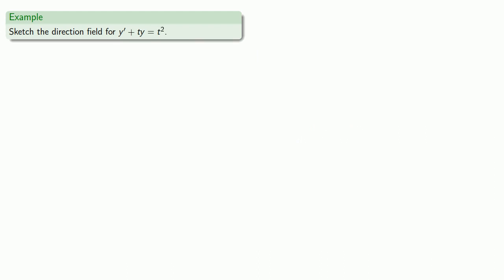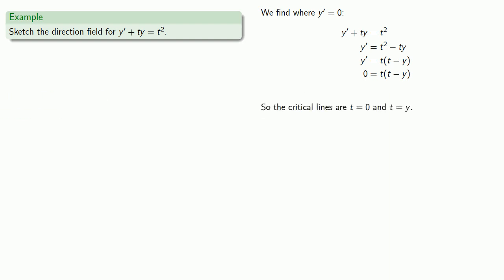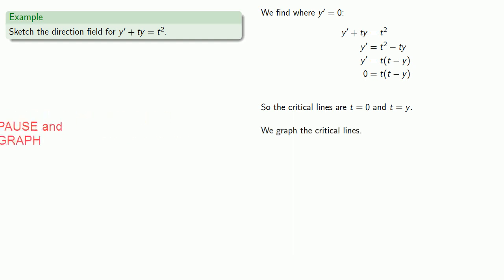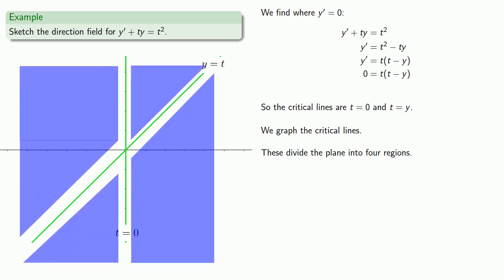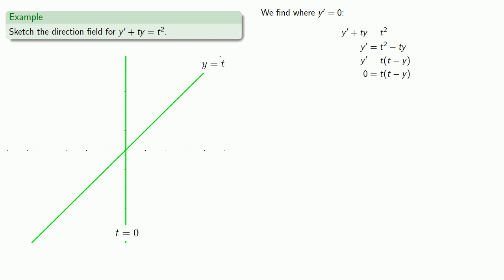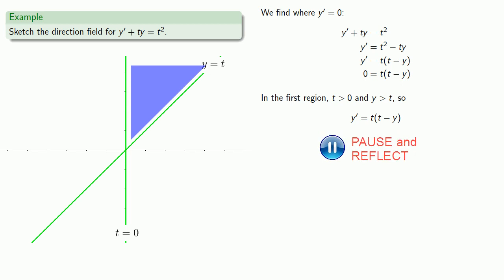Now consider another differential equation. We want to find where y' is equal to 0. Setting it equal to 0 and solving gives us the critical lines t = 0 and t = y. We graph the critical lines, and note that these divide the plane into four regions. In the first region, t is greater than 0 and y is greater than t. Using the factored form of the derivative, our derivative is going to be negative, so the direction arrow points down and to the right.